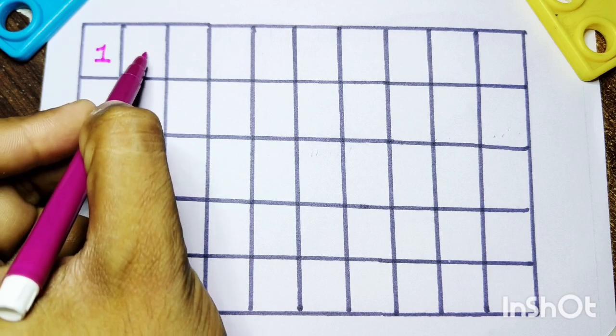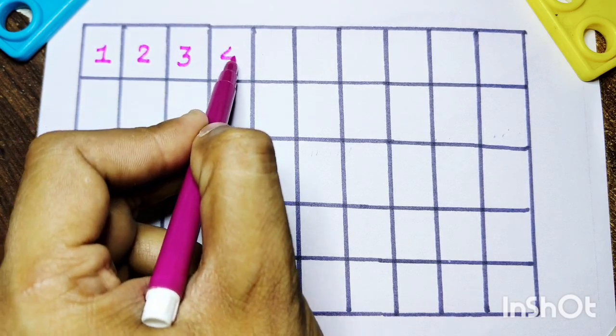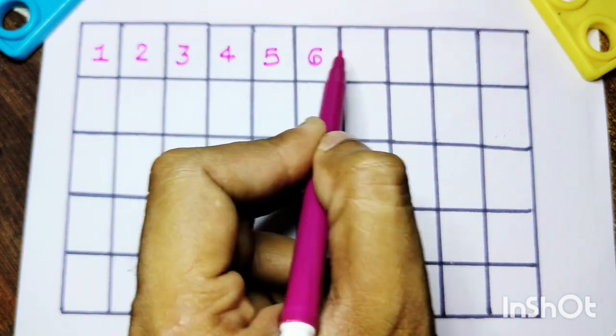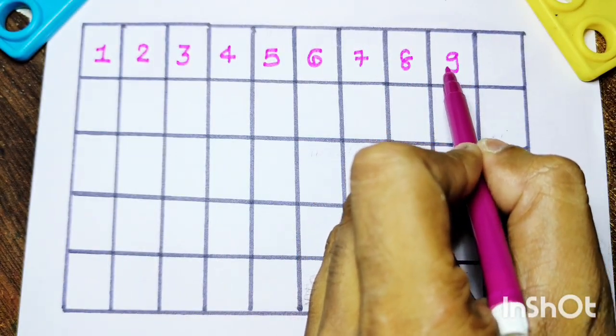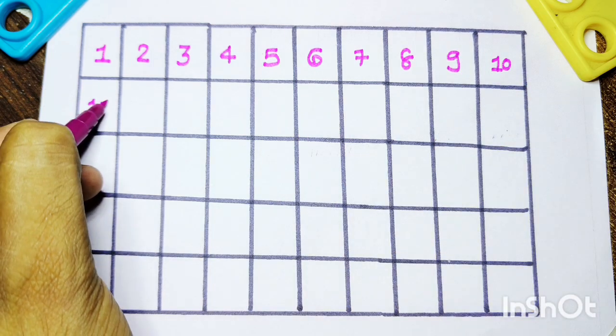Let's start. 1, 2, 3, 4, 5, 6, 7, 8, 9, 10, 11.